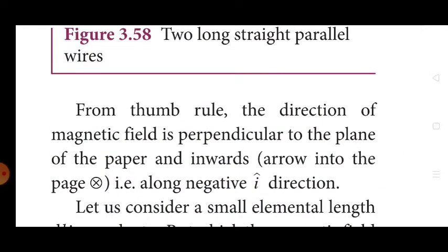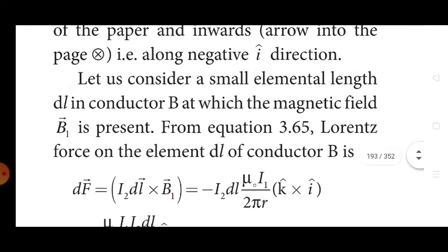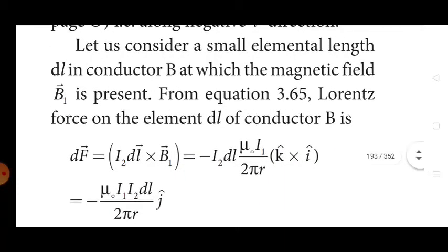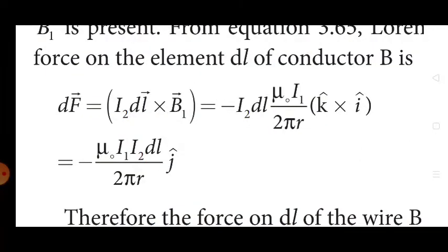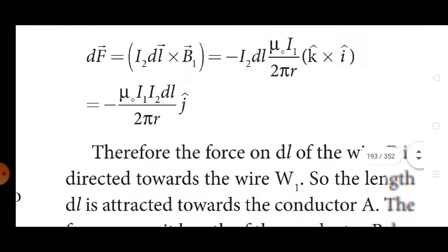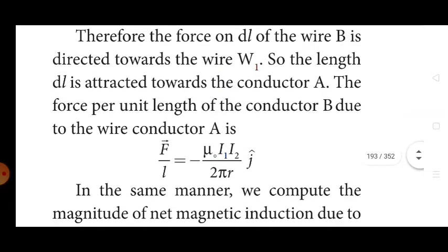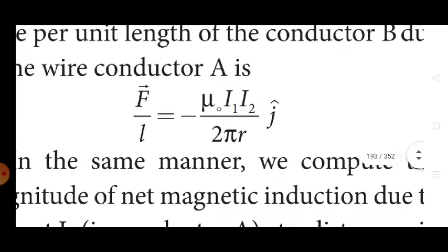From the right-hand thumb rule, the direction of the magnetic field is perpendicular to the plane of the paper and into the paper — that means along the negative î direction. Consider a small element of length dL of conductor B at which the magnetic field B₁ vector is present. The Lorentz force on element dL of conductor B is: dF vector = I₂·dL vector × B₁ = −I₂·dL·(μ₀I₁)/(2πr) (k̂ × î) = −(μ₀I₁I₂)/(2πr) dL ĵ. Therefore, the force per unit length of conductor B due to conductor A is: F/L = (μ₀I₁I₂)/(2πr) ĵ.